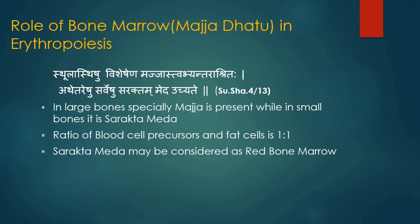Role of Majja Dhatu in Erythropoiesis: Majja dhatu also plays an important role in formation of Rakta dhatu. Majja is present in the cavities of large bones whereas Sarakta medh, i.e. red bone marrow, is present in the cavities of small bones. At the time of birth all marrow is red bone marrow, but with advancement of age some of it is converted into yellow bone marrow. Red bone marrow is present in vertebrae, ribs, sternum, cranium and upper part of long bones, and is the precursor of blood cells. The ratio of blood cell precursors to fat cells is 1 to 1.